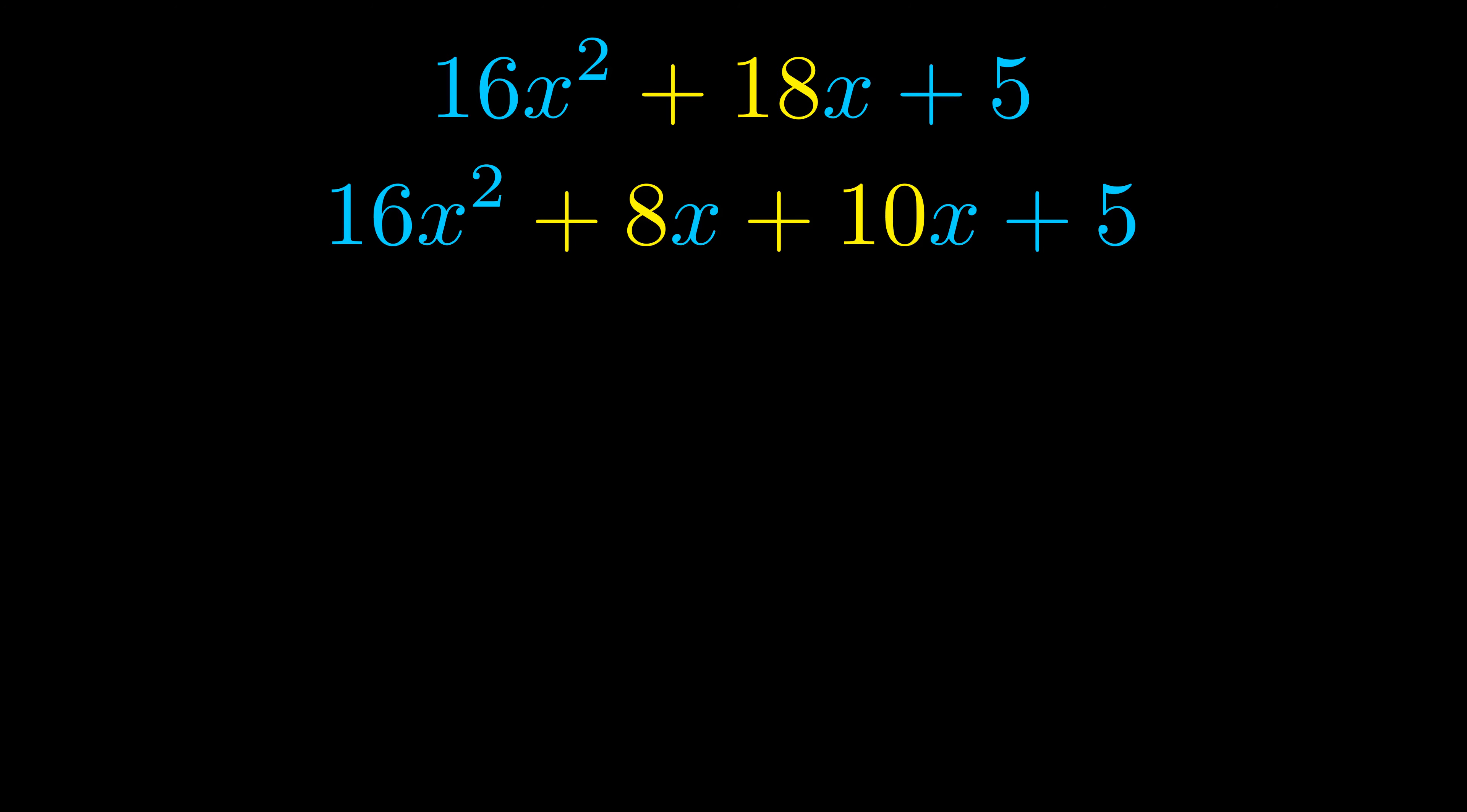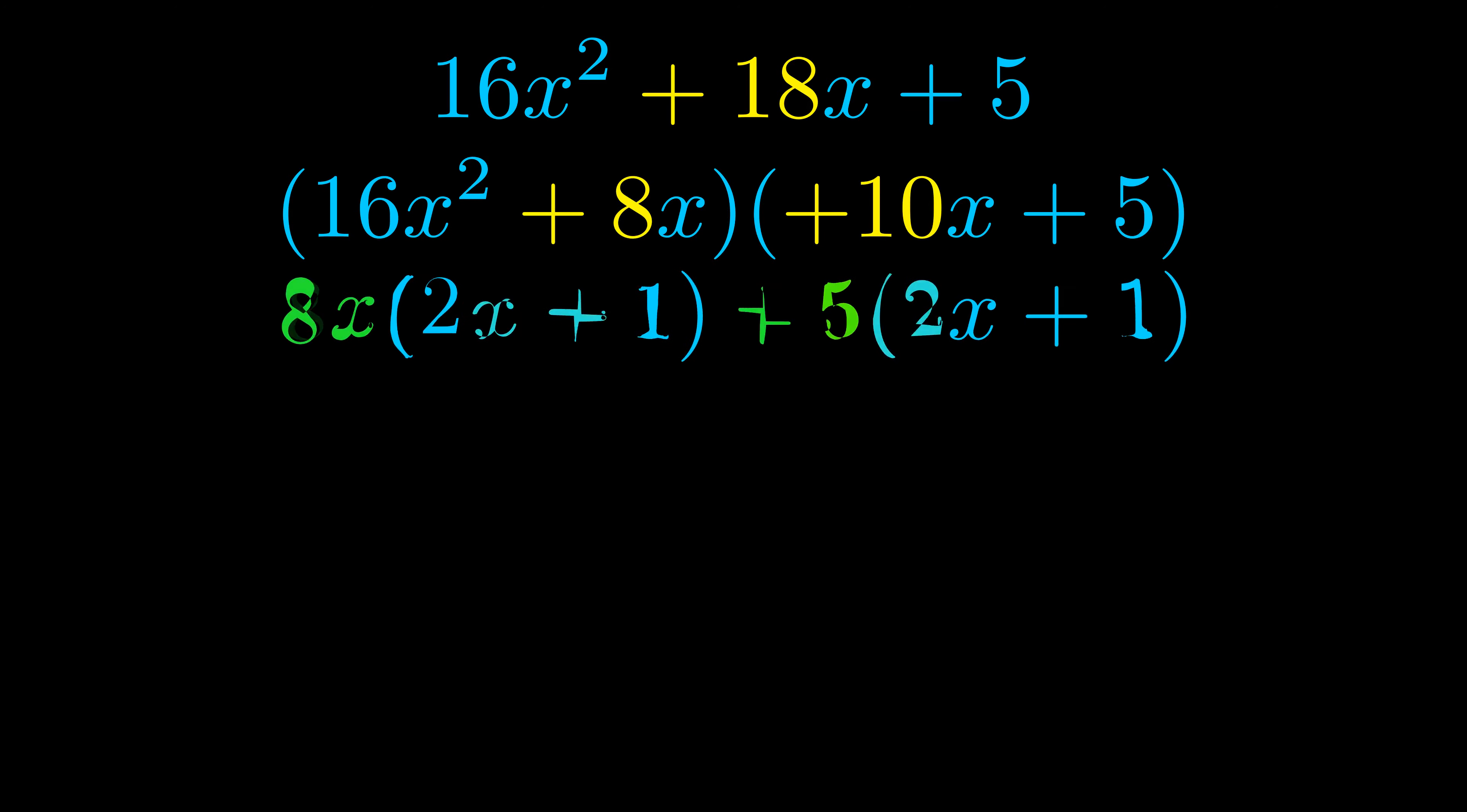Once we've done this, we go ahead and we put parentheses around the first term and the last term, and we do that so that we can take the greatest common factor out of both terms. We can see the greatest common factor is now outside in green.